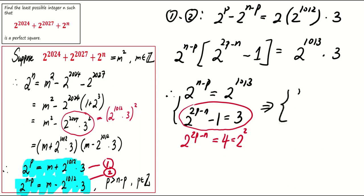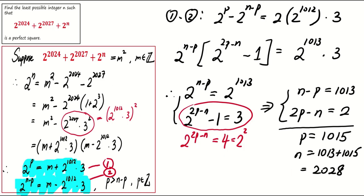With this, we have n minus p equals 1013 and 2p minus n equals 2. Sum up these two equations and we get p equals 1015 and hence n equals 2028. So far it looks good.